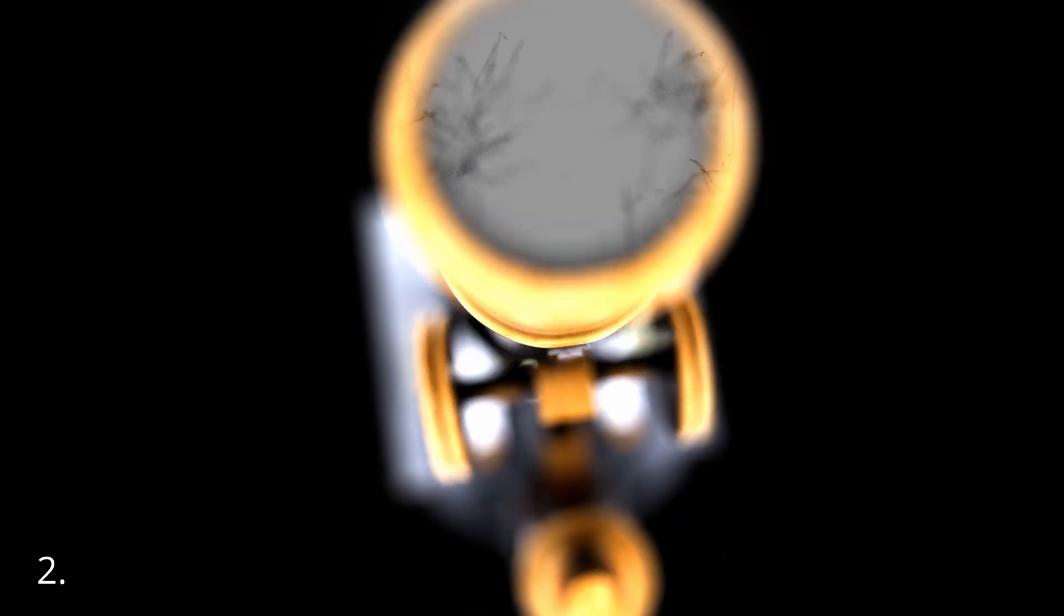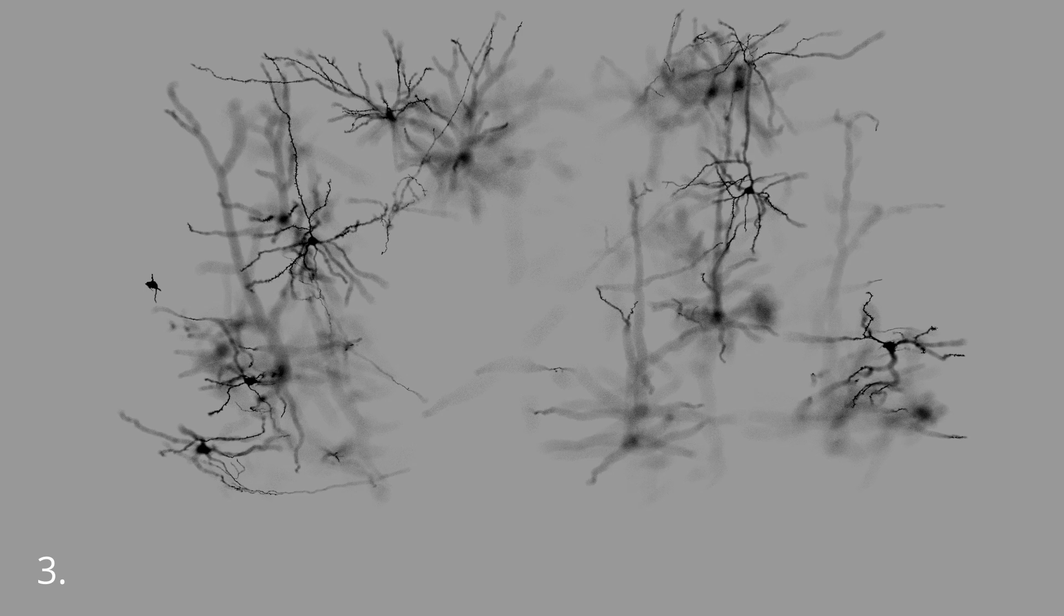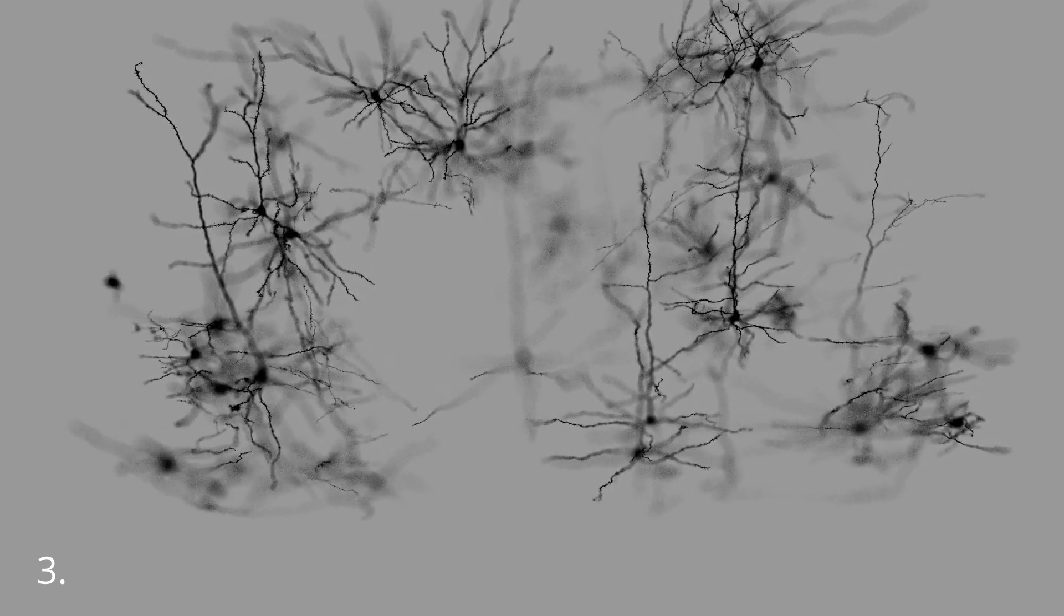Neuroscience as we know it started around the turn of the 20th century, when Victorian-era scientists using home-brewed staining techniques revealed that the brain was built from discrete units, the neuron.